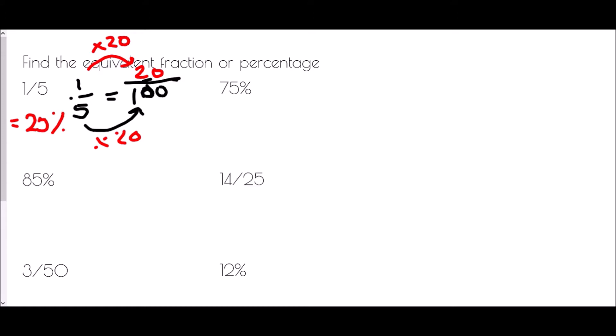For 85 percent: to turn a percentage into a fraction, just write it over 100, so 85 percent becomes 85 over 100. Now we want to simplify — what number goes into both 85 and 100? The answer is 5. Five goes into 85 seventeen times, and five goes into 100 twenty times. So 85 percent is exactly the same as 17 over 20.